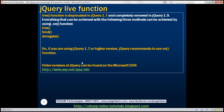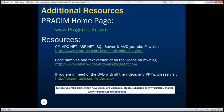But keep in mind, whatever you can achieve with the live function, you can achieve with the on function. The live function is deprecated in jQuery 1.7 and completely removed in jQuery 1.9. Everything that can be achieved with live, bind, or delegate can be achieved using the on function. So if you're using jQuery version 1.7 or higher, jQuery recommends using the on function instead of live, bind, or delegate. Here is the URL for the Microsoft CDN. Thank you for listening and have a great day.